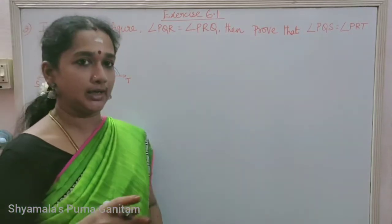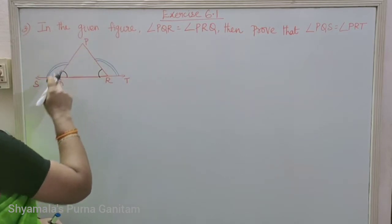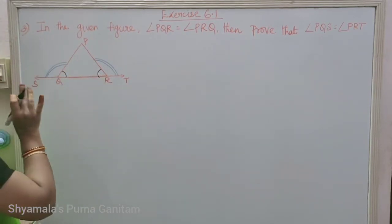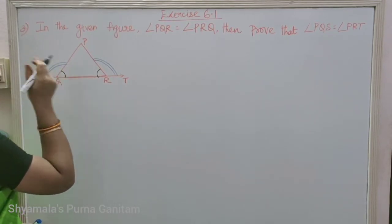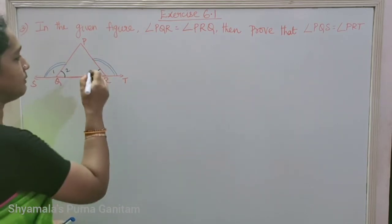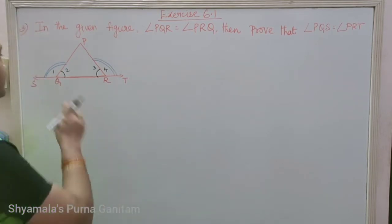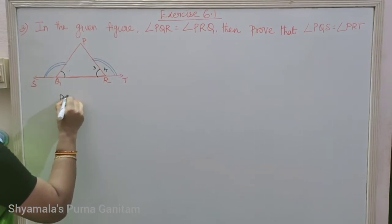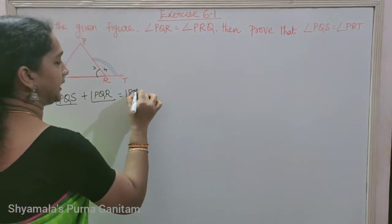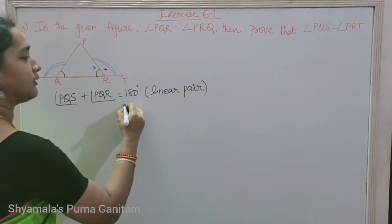We know that when the sum of two angles is 180 degrees, we call it a linear pair. As per the given question, angle PQS plus angle PQR equals 180 degrees, since this is a linear pair. We will take this as the first equation.